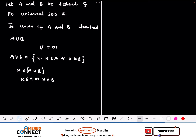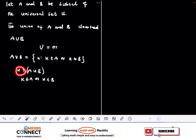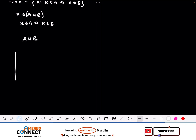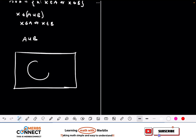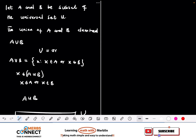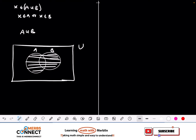The idea is that if x belongs to A union B, we can expand this as x belongs to A or x belongs to B — that is how we convert union to 'or'. Now let's draw what A union B looks like. If we have set A and set B inside universal set U, then A union B is everything — all elements in both sets.